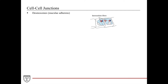Next, we have desmosomes, also known as the maculae adherens. Macula stands for a spot, and adherens stands for adhesion. So desmosomes are these spot-like adhesions between neighboring cells, as opposed to the belt-like structure of the zonula adherens. Desmosomes are located below the level of the zonula adherens, still on the lateral aspects of the cell membrane, and there are usually a number of these spot adhesion sites holding neighboring cells together.